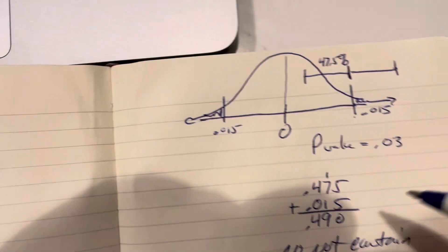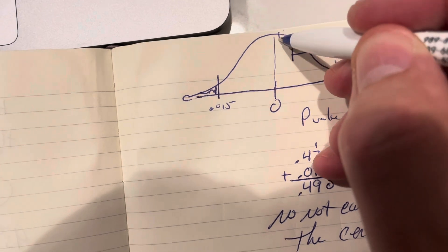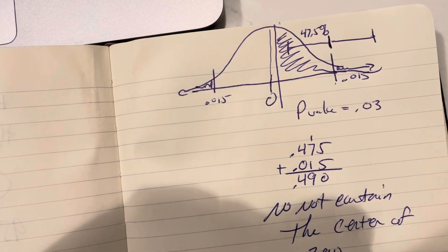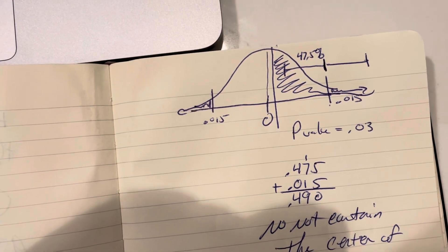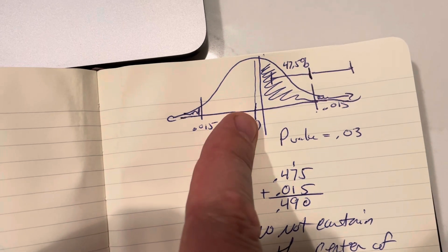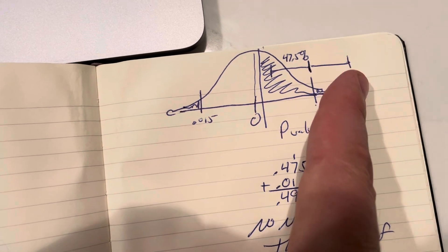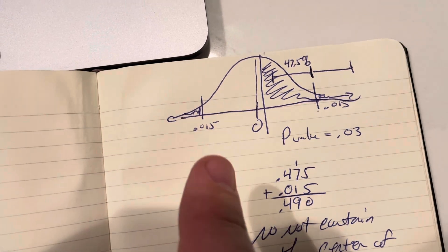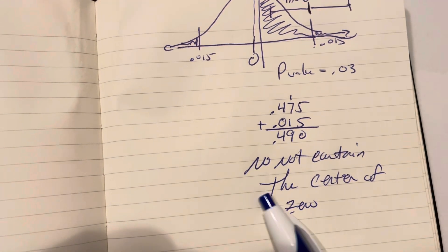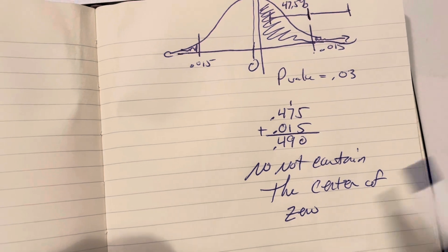The area of 0.490 is about here. This is an area of 0.490. It's just a hand sketch and it's an approximation. But it's not going to be larger or past the middle because from negative infinity to 0 is 0.50. So it does not contain the center of 0.